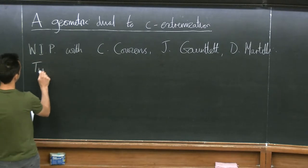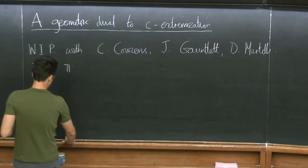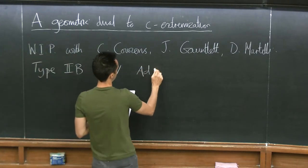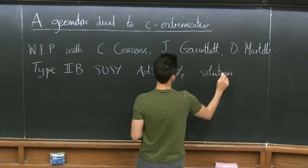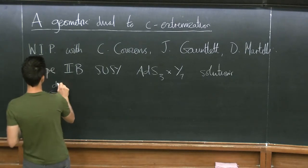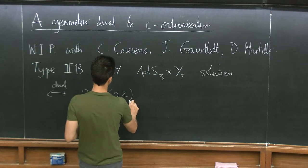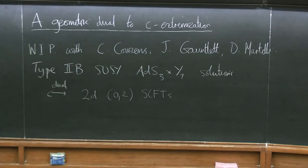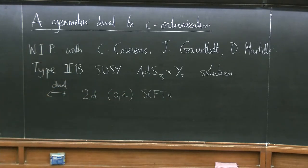So what are we going to be interested in? We're interested in Type IIB supersymmetric ADS3 times Y7 solutions, where Y7 is a compact 7-manifold. These will be holographically dual to two-dimensional (0,2) superconformal field theories, so we get (0,2) supersymmetry for the dual field theory that lives on the conformal boundary of this ADS3.